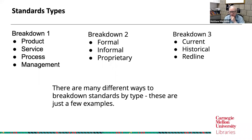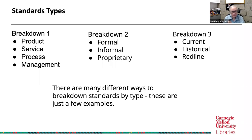Yet another breakdown might be whether it's a current, historical, or redline type standard. A current standard is one currently being used. A historical standard might be an earlier version. Those can be very important — early in my career at the University of South Carolina, local law firms would come to the university to look at historical standards because they needed to know what the standard was at the time a particular structure was built or a product was made, because they were in litigation over somebody getting hurt.